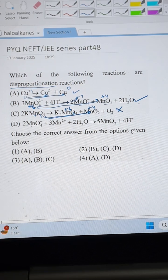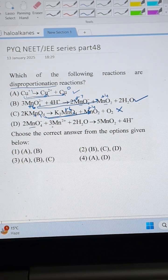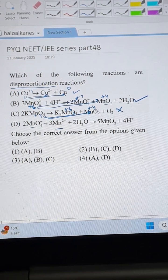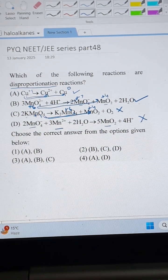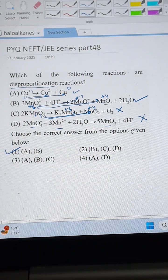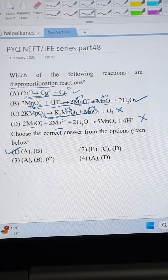And in the fourth one we don't have to check because two oxidizing states are converting to one oxidation state. This was not the condition for disproportionation reaction. So A and B are disproportionation reactions. First one is the correct answer. Please like and subscribe.